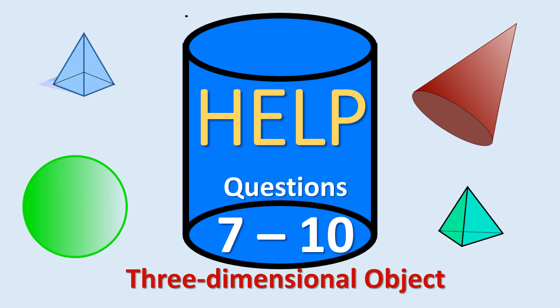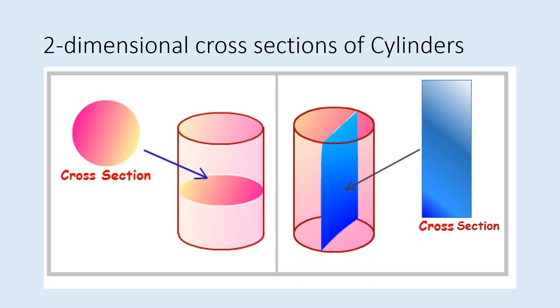Help for questions 7 through 10. Let's get started. Now we are looking at three dimensional shapes and when you slice them horizontally or vertically you're going to get a two-dimensional shape.